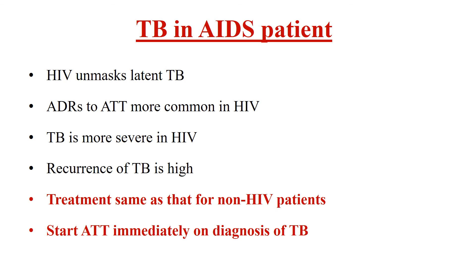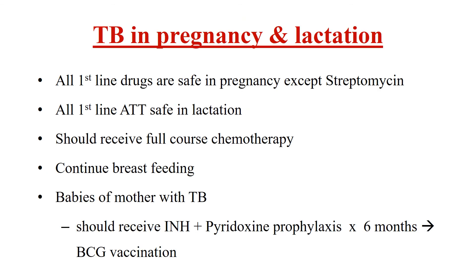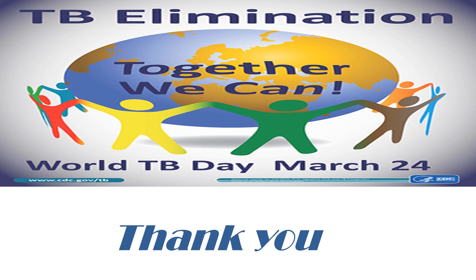TB in AIDS patients: HIV unmasks latent TB; there are high chances of adverse drug reactions against anti-TB drugs, manifestations are more severe, and high chances of recurrence. Treatment is usually the same as non-HIV patients and should be started immediately on diagnosis. TB in pregnancy and lactation: all first-line anti-TB drugs are safe in pregnancy except streptomycin. Breastfeeding should be continued; babies should get isoniazid plus pyridoxine for six months and proper BCG vaccination. That concludes the management of tuberculosis.